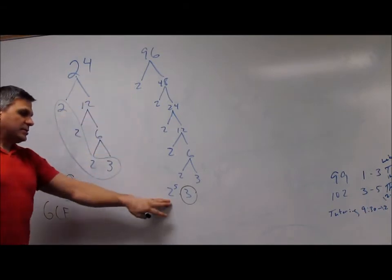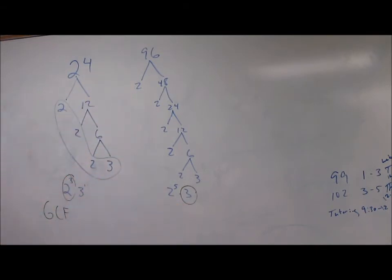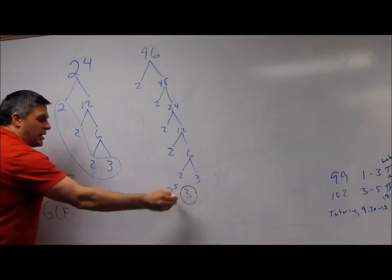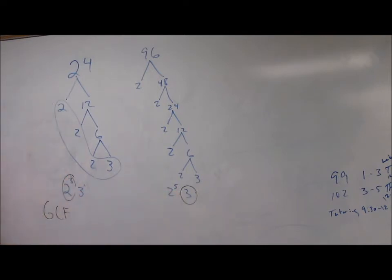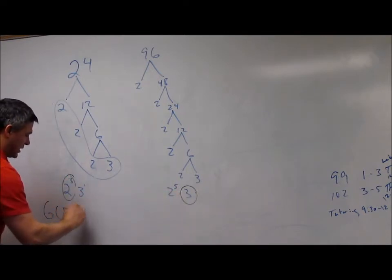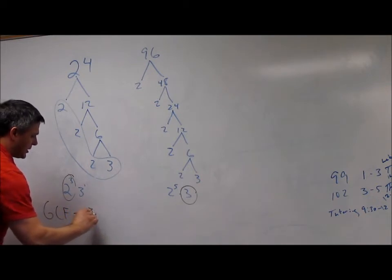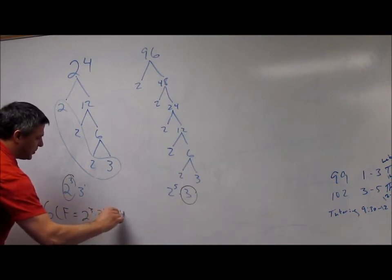Same thing with 96: 2 to the fifth, 3 to the first. A GCF is the exponential form of those that have the lowest exponents. So the ones with the lowest exponents win. You have 2 to the third and 3 to the one, so the GCF is 2 to the third times 3 to the one, which equals 24.